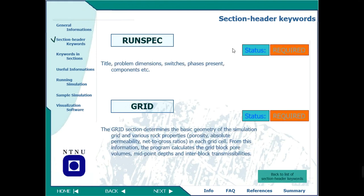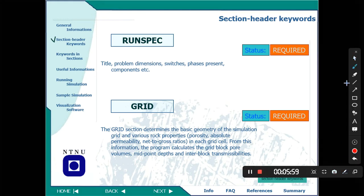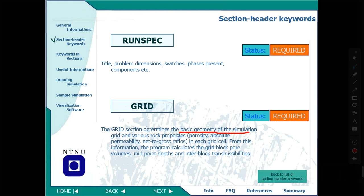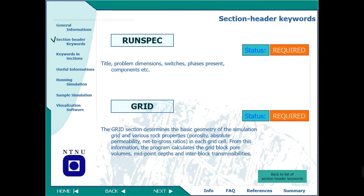The RUNSPEC section is the basic section. It tells us about the title, the names, how many phases it has, whether it is black oil or compositional, and so on — the basic information. The GRID section talks about the basic reservoir geometry, the various grid blocks, and properties like porosity, permeability, and net-to-gross ratio for each grid cell. So GRID is about grid information, while RUNSPEC is just the basic introduction — name, title, and so on.